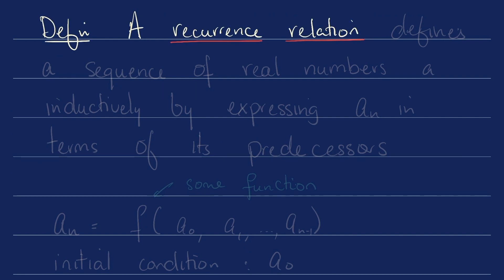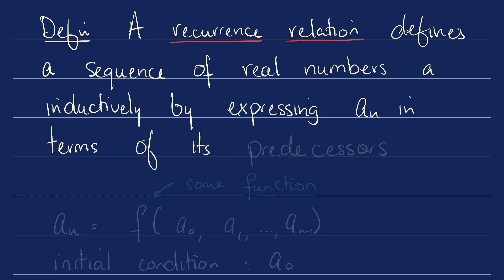Definition. A recurrence relation defines a sequence of real numbers, a, inductively by expressing each term a sub n in terms of its predecessors. a sub n is going to be F of a0, a1, all the way to a_n,